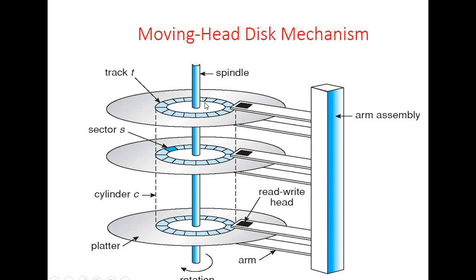When the required data from a particular track and sector is needed, the arm assembly moves to a corresponding cylinder on the platter, and the central spindle rotates the platter to bring the track and sector under the read-write head, such that the read-write head will read the data from the corresponding sector present in that track. In that way, with the help of the read-write head and the central spindle, the required data from a corresponding platter is obtained.